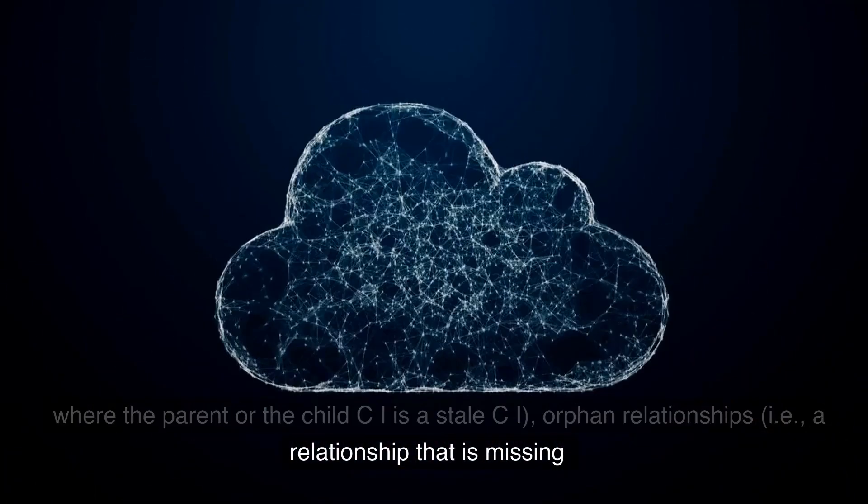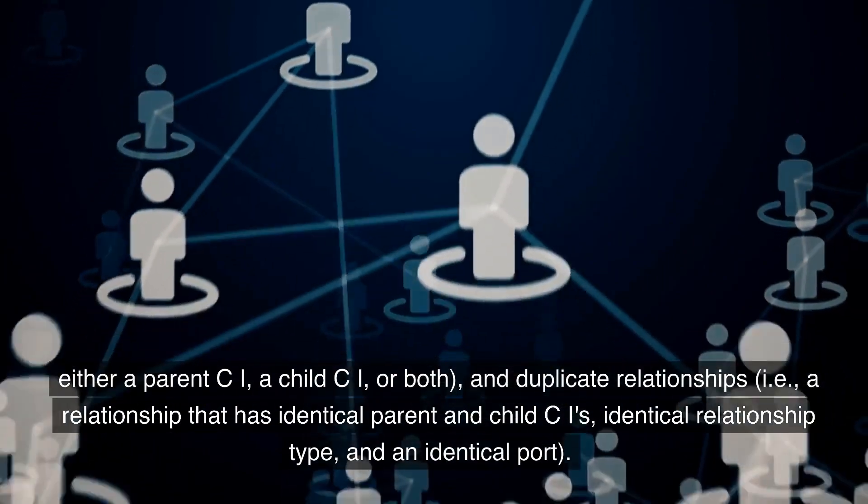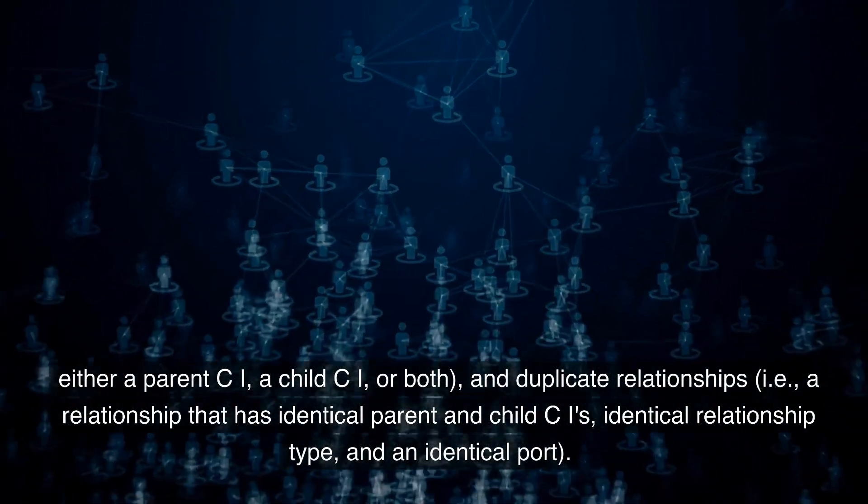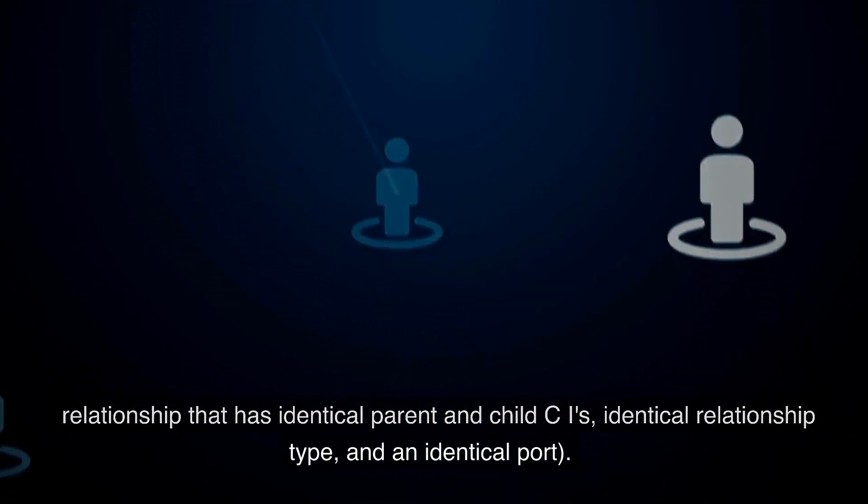Orphan relationships, i.e., a relationship that is missing either a parent CI, a child CI, or both, and duplicate relationships, i.e., a relationship that has identical parent and child CIs, identical relationship type, and an identical port.